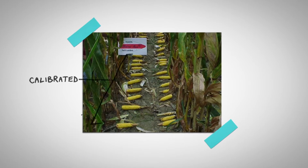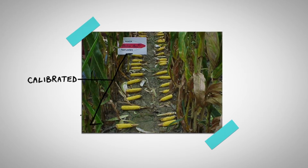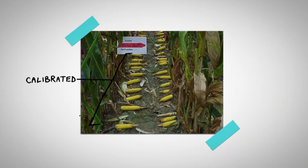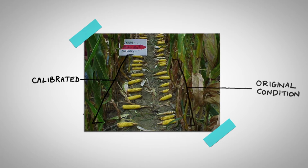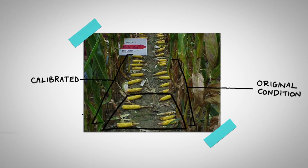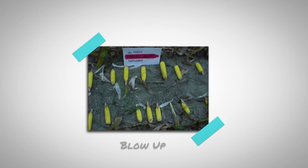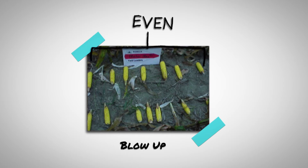We had calibrated one side of the planter — went through the finger pickup units, made sure they were all working properly, and calibrated it for seed size — then left the other side of the planter in its original condition. This is just the blow-up of that section right here, and you can see where we calibrated we have seven fairly uniform, consistent ears.